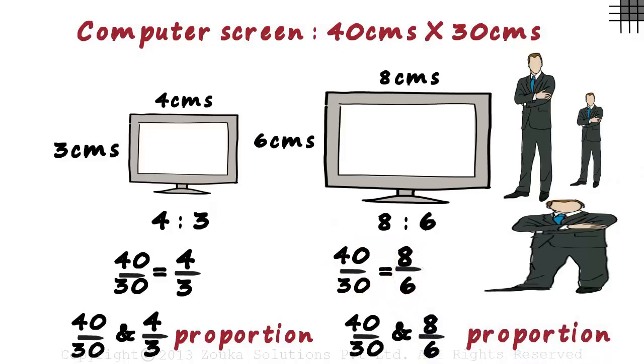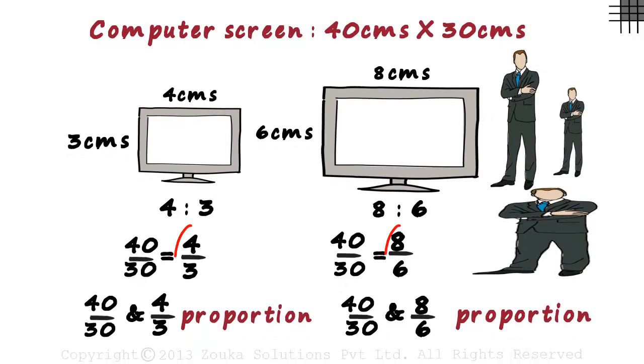If you observed well, you'd say even these two ratios are equal. If we divide the numerator and the denominator of this ratio by 2, we get 4 by 3. Hence, we say that the ratios 4 by 3 and 8 by 6 are also in proportion.